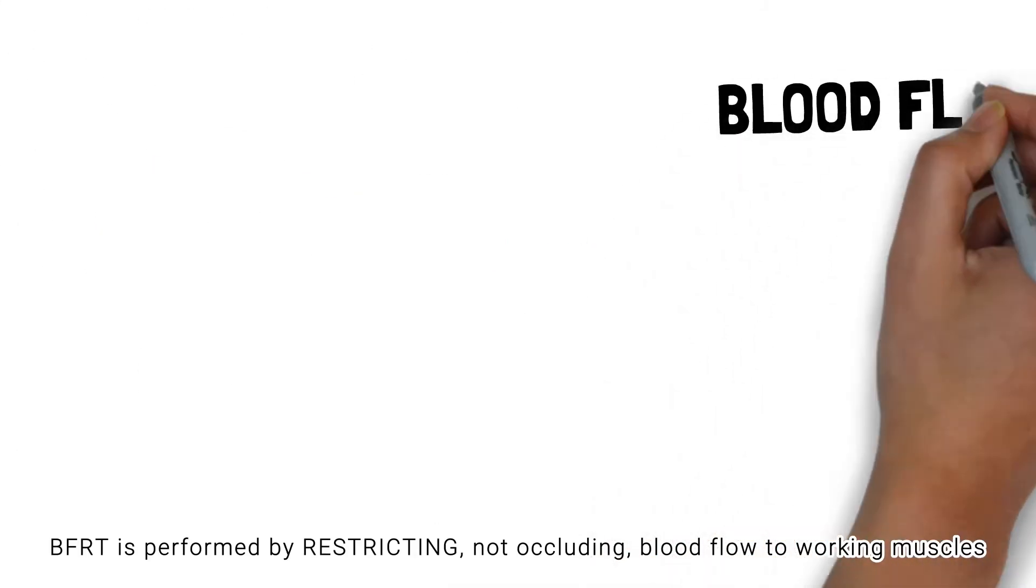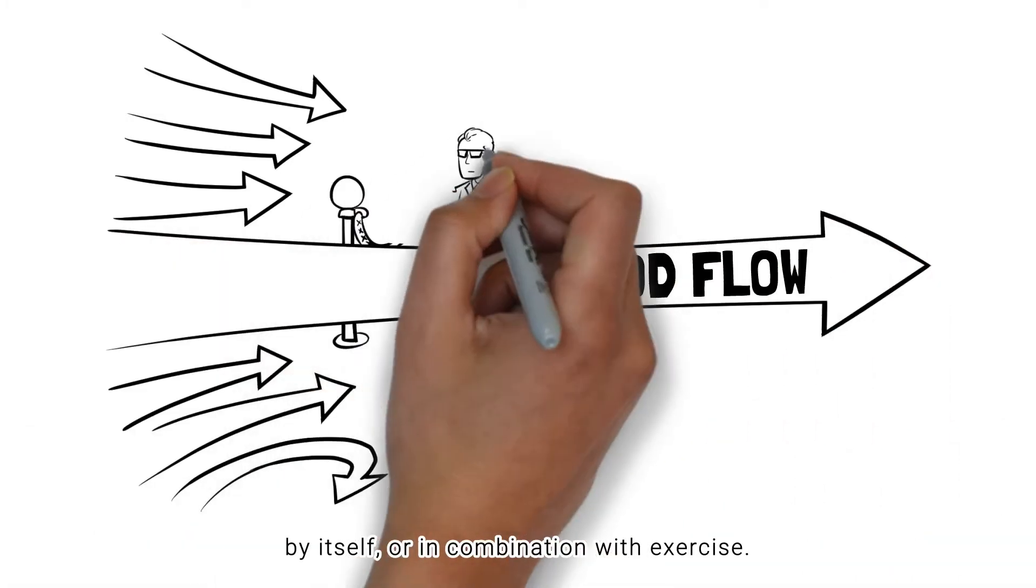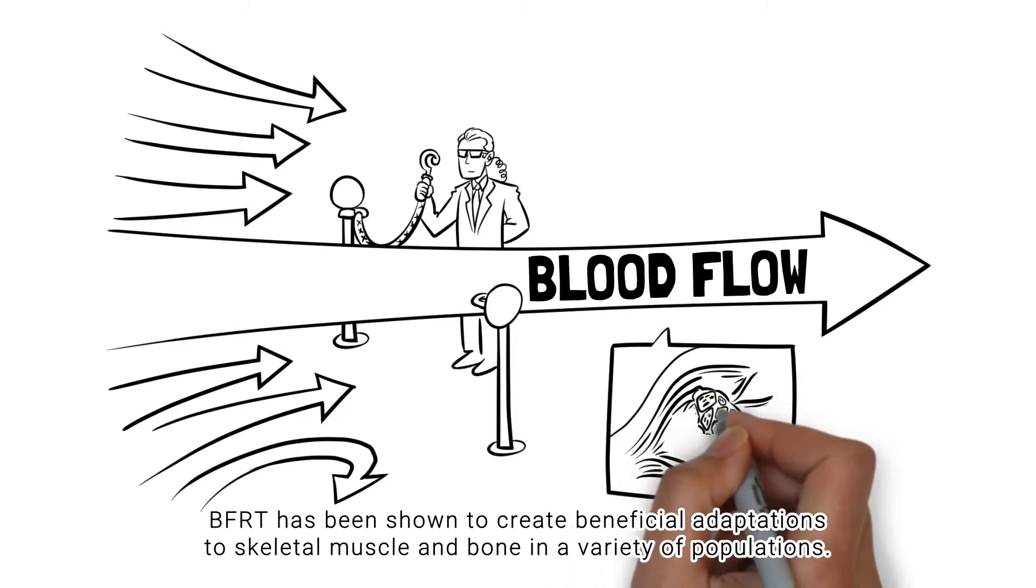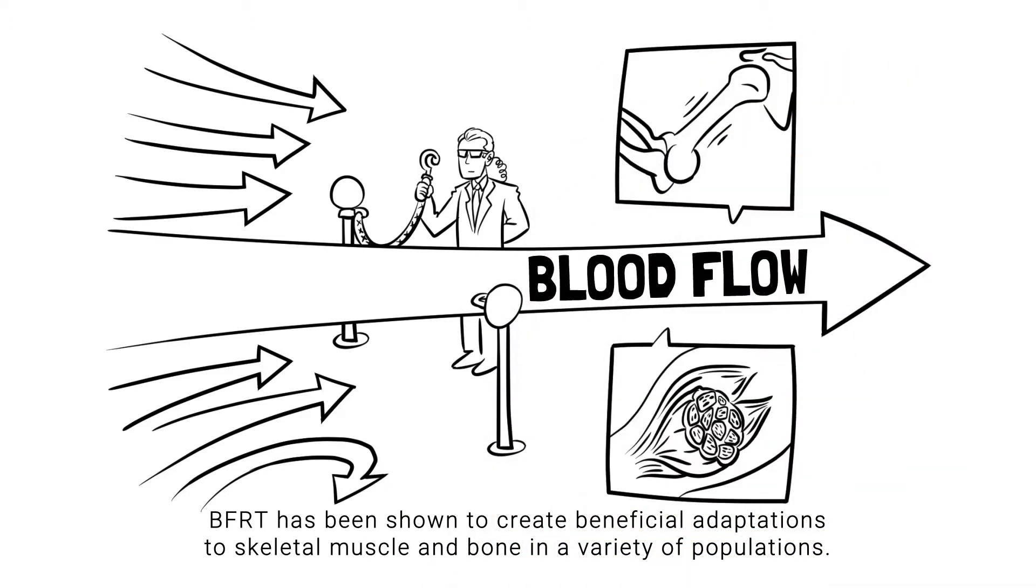BFRT is performed by restricting, not occluding, blood flow to the working muscles by itself or in combination with exercise. BFRT has been shown to create beneficial adaptations to skeletal muscle and bone in a variety of populations.